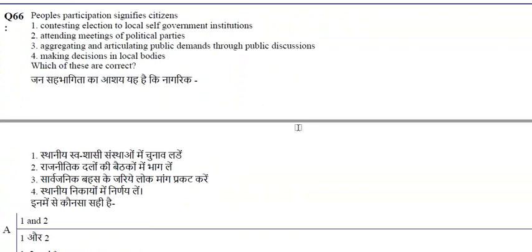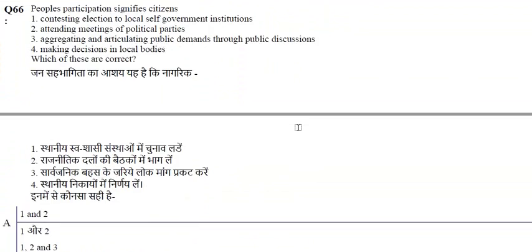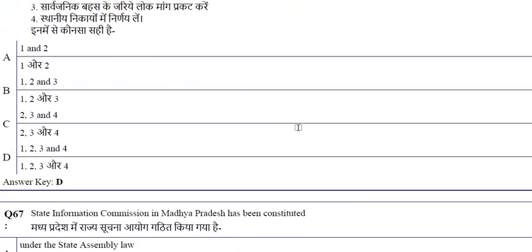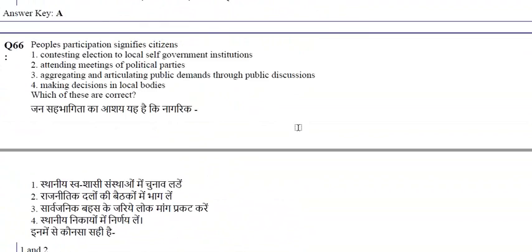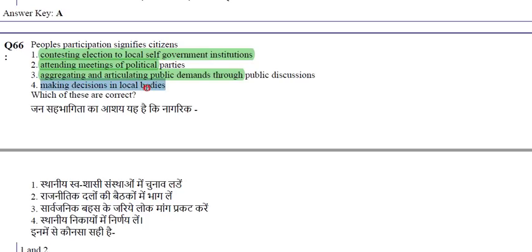People's participation signifies all of the following: contesting elections to local self-government institutions, attending meetings of political parties, aggregating and articulating public demands through public discussions, and making decisions in local bodies.